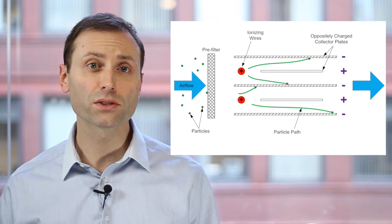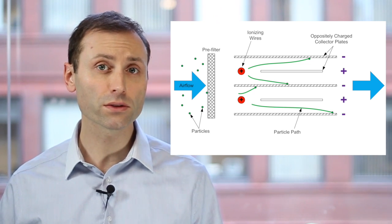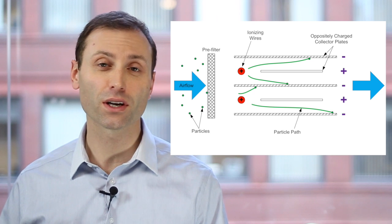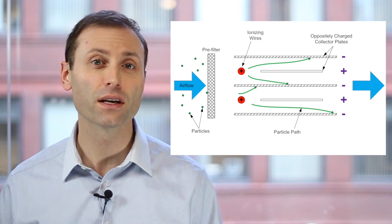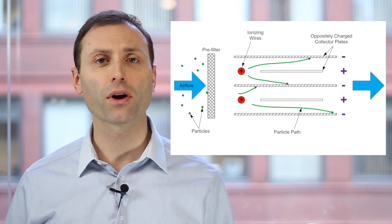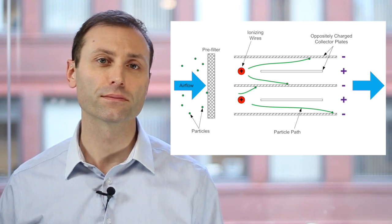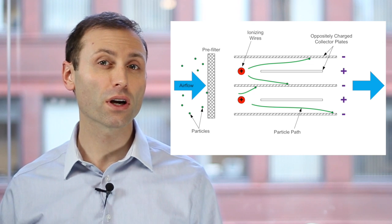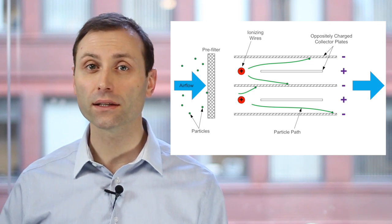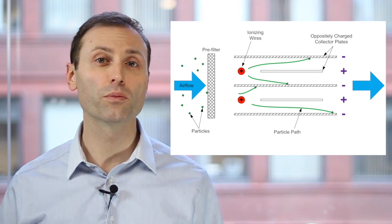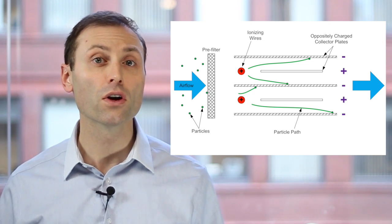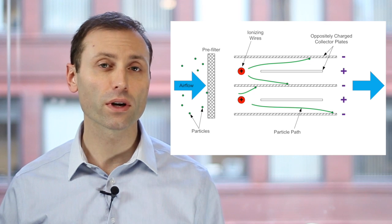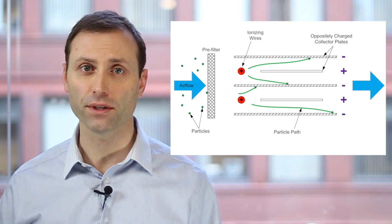The more positively charged the particles, and the more negatively charged the plates, the greater the particle removal. However, the greater the difference in charge, the more likely ozone will be produced, which is considered an indoor air contaminant.